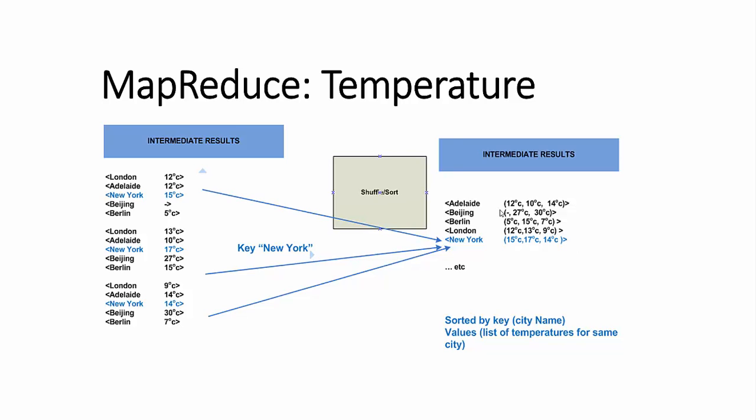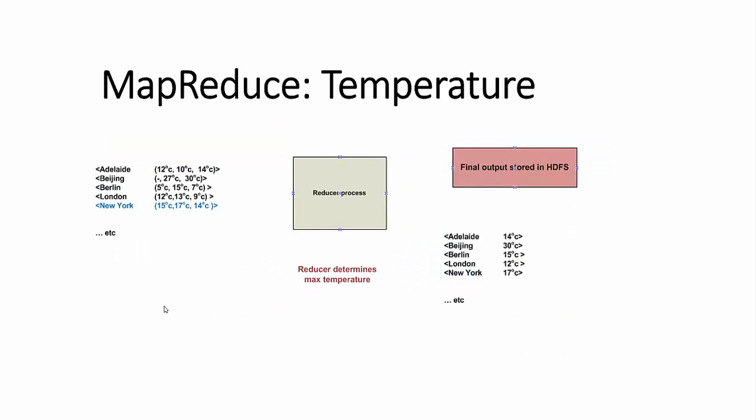The third and final step is to take the intermediate data from the shuffle and sort operation and find the maximum temperature for a given city.